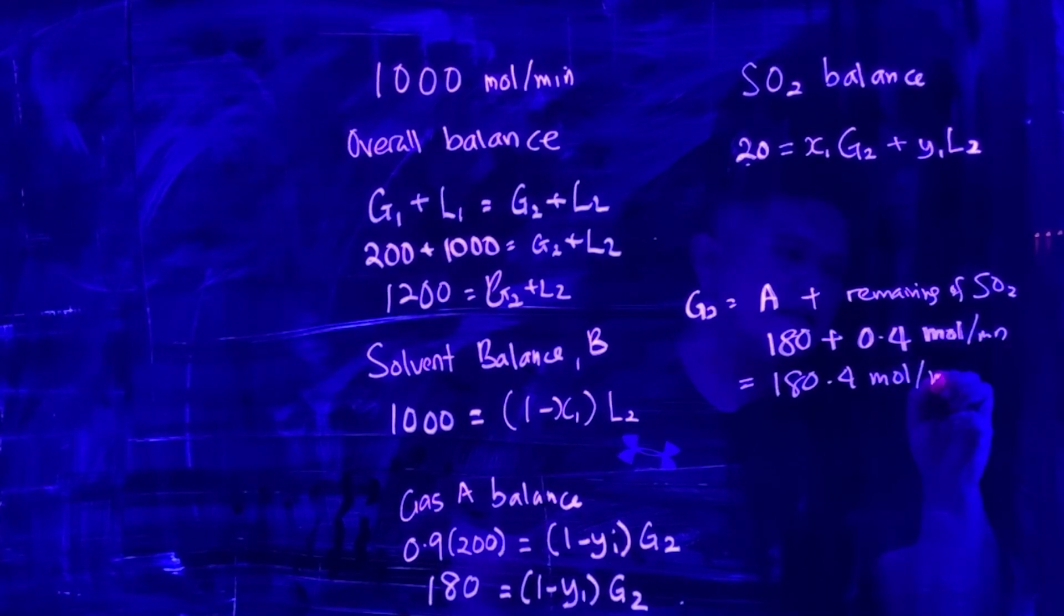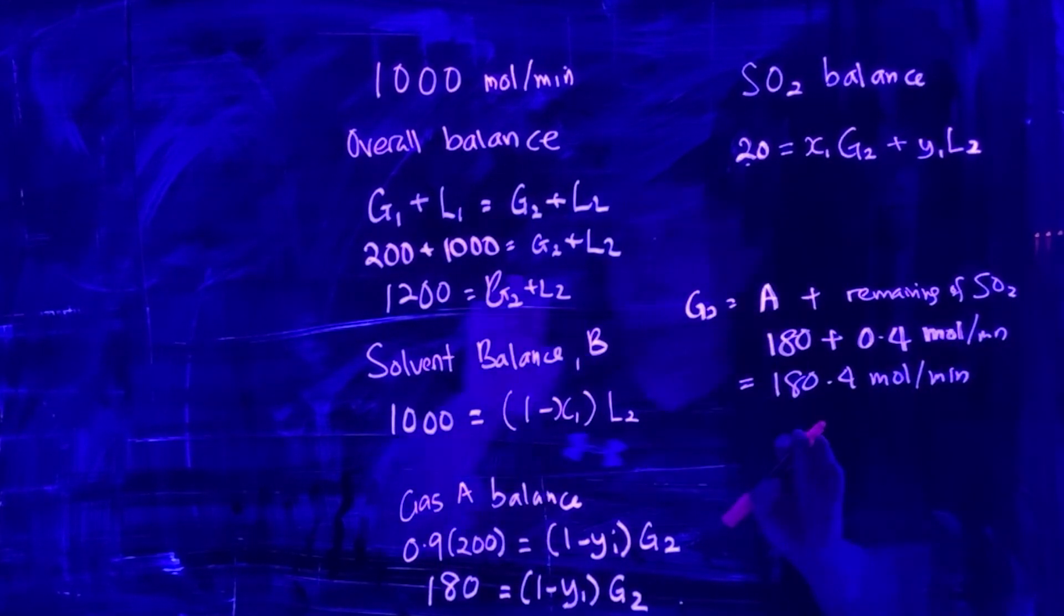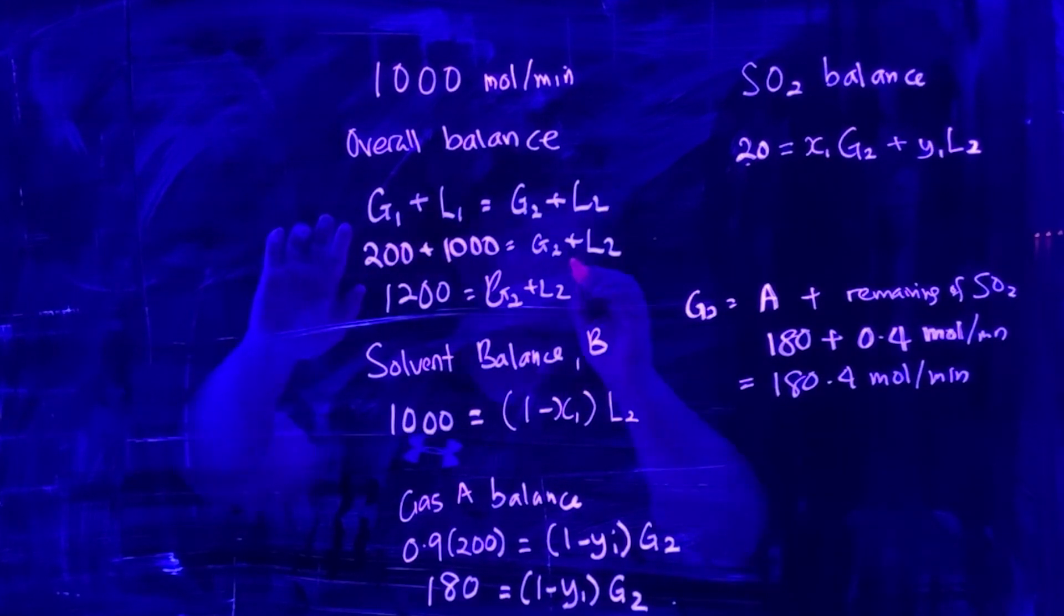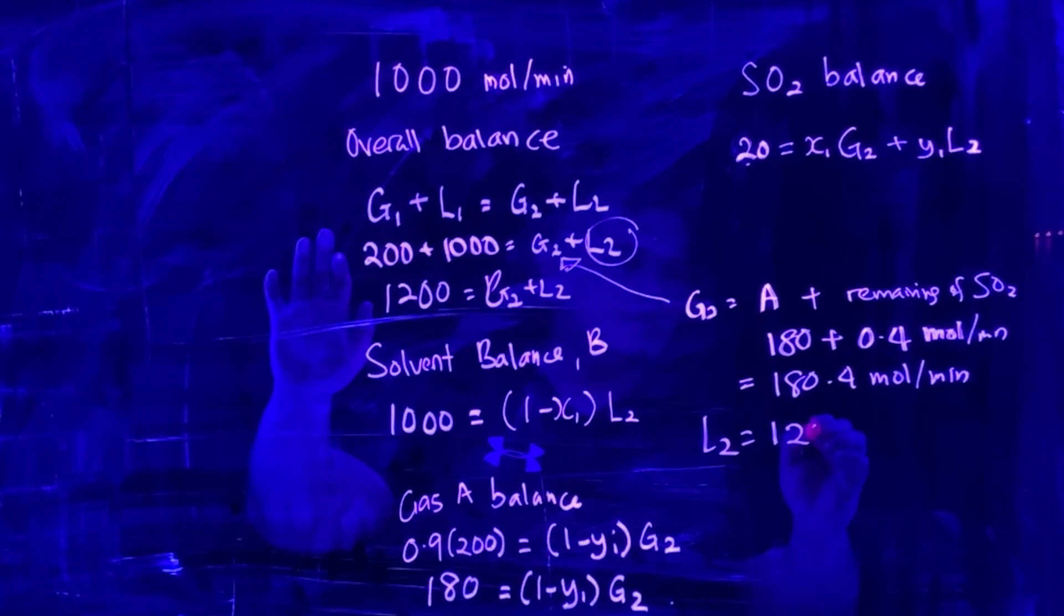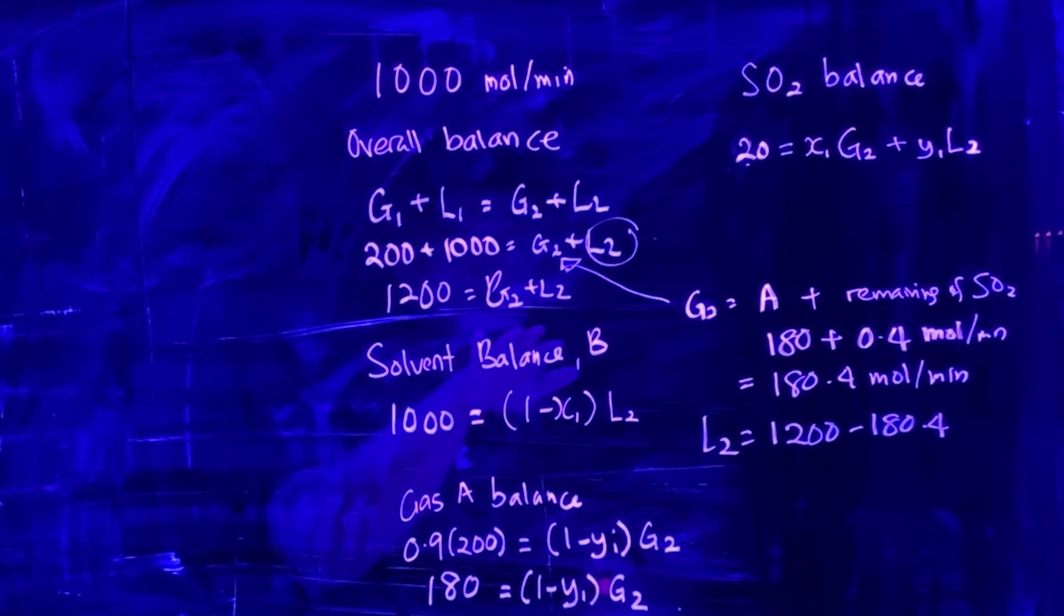When you substitute G2 here, you'll know what your L2 is. L2 equals 1200 minus 180.4 mole per minute.